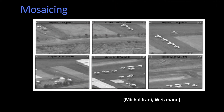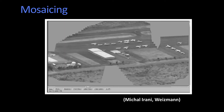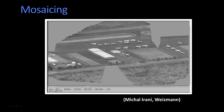What you might want to do is make a single image. And this comes from Michal Arani's work, where you can see where all the frames are. You can sort of see this jagged line, each one being the edge of a frame. And you realize what happened is that the camera was swept out this way.